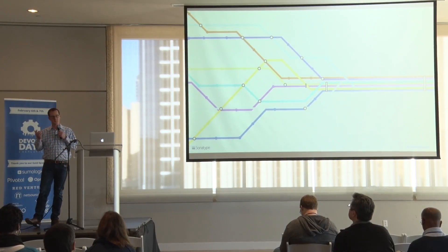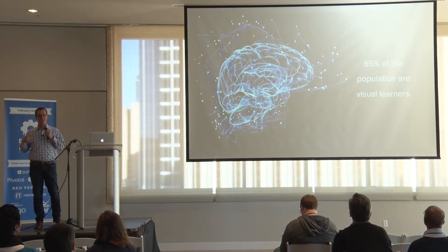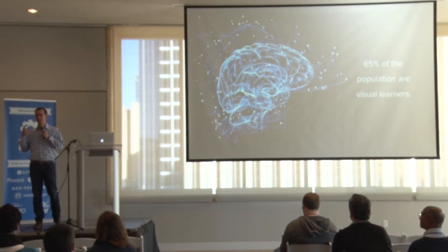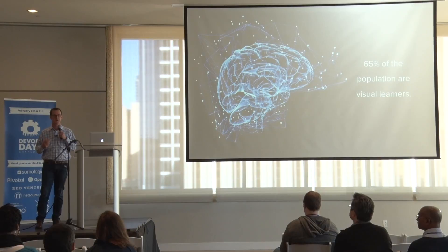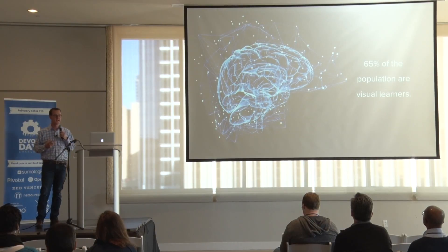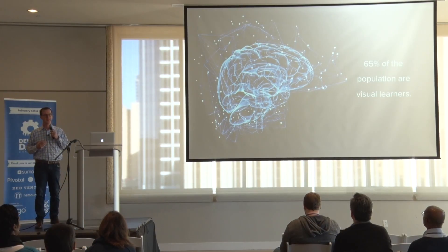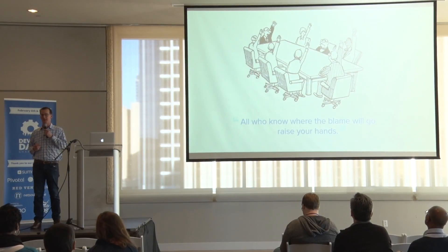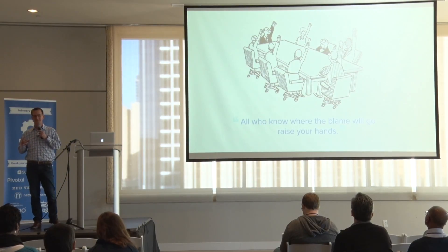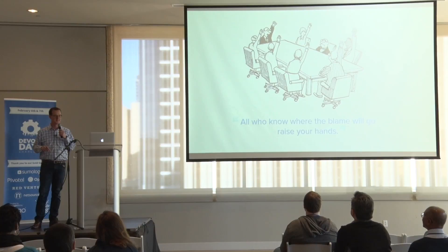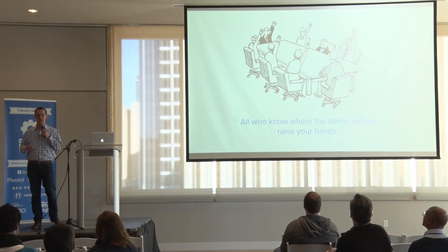Most of us are visual learners, so when you see a picture, you can grasp the concepts very quickly and understand what it's trying to communicate and what story it's trying to tell. And when you put a picture at the center of the conversation, it's less about who screwed up — maybe we actually have the wrong picture, and maybe we want to improve it.